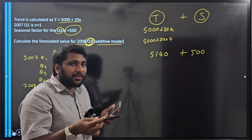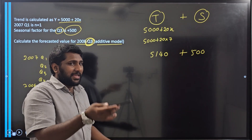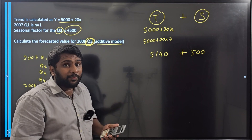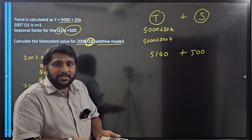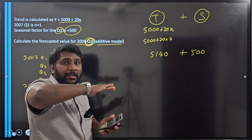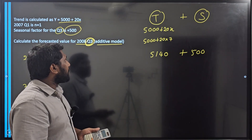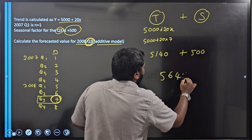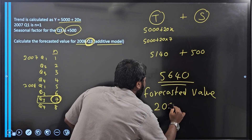The meaning of plus 500 is that because of the season, your sales are increasing by 500. If it were minus 500, it would mean your sales are decreasing by 500. For example, if you are selling sunglasses, during winter your sales will come down due to the season. But for garments, in December — the Christmas and New Year season — people buy new clothes, so your sales go up beyond the normal underlying trend. That's why when doing a forecasting we must consider the seasonal effect as well. Here, for the third quarter, because of the season there is an increase of 500. So the forecasted value is 5140 plus 500 equals 5640.